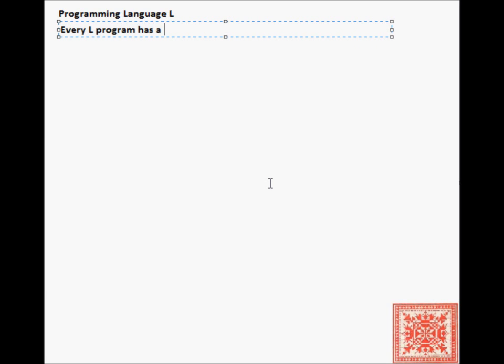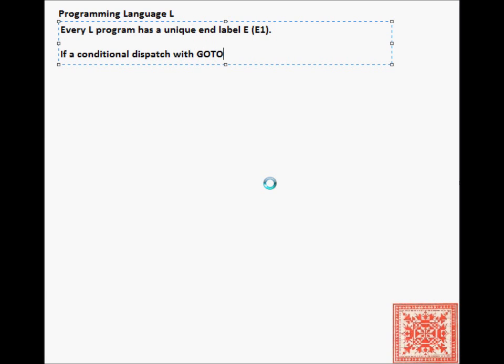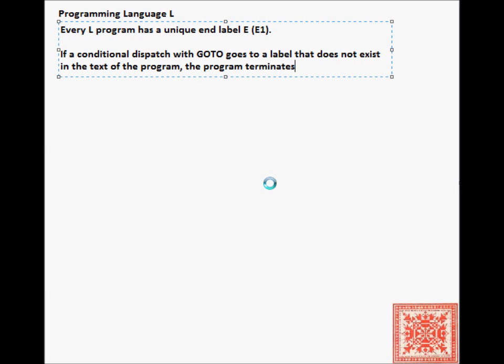Every L program has a unique end of computation label, E or E1. If a conditional dispatch goes to a label that does not exist in the text of the program, then the program immediately terminates.